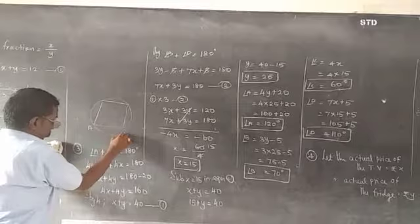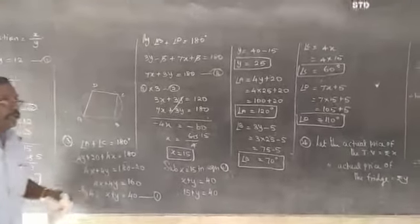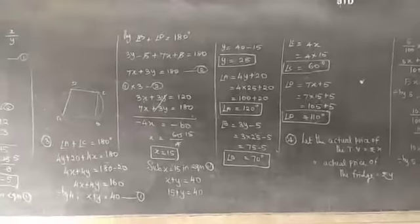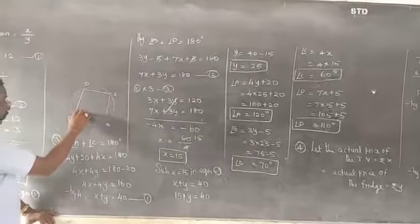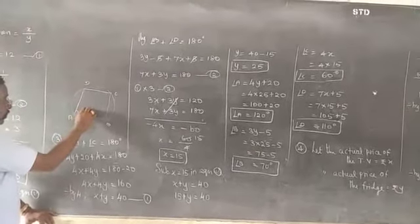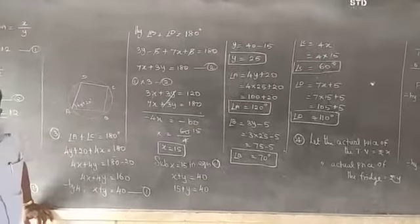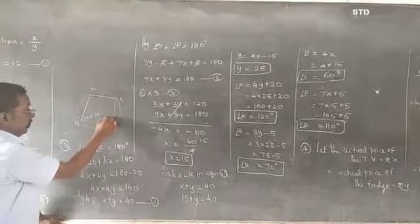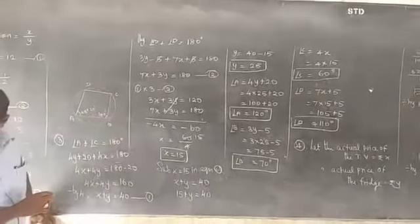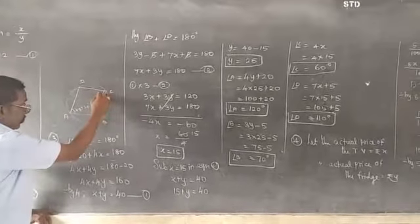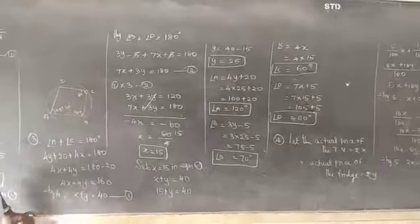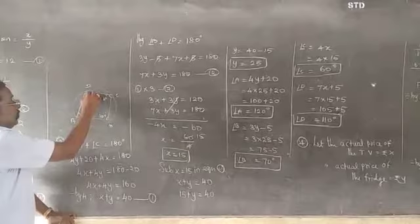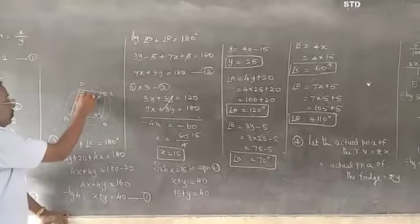A, B, C, D is a cyclic quadrilateral. Angle A is 4Y plus 30 degrees. Angle B is 3Y minus 3 degrees. Angle C is 4X degrees. Angle D is 7X plus 30 degrees.